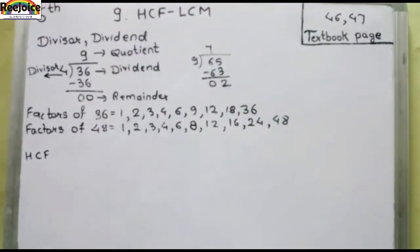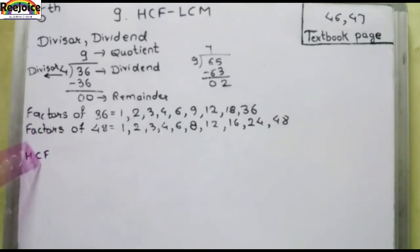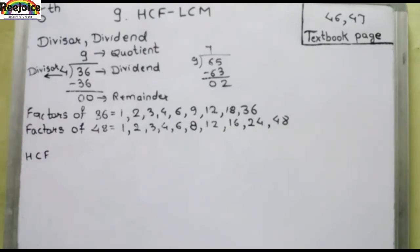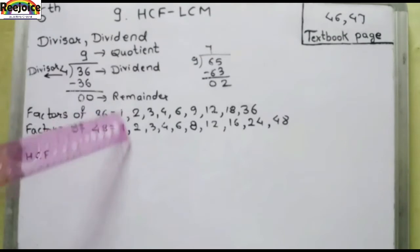So what is HCF? HCF means Highest Common Factor. To find the highest common factor of given numbers, we make a list of the factors of the numbers and find the greatest of the common factors. This means we have to make the list of factors and we have to see the greatest common factors in these lists.